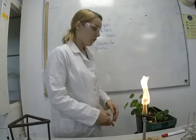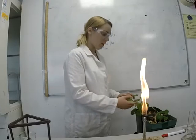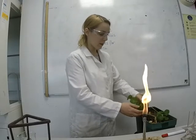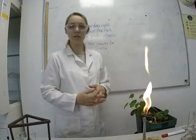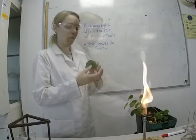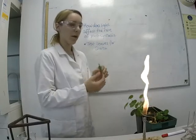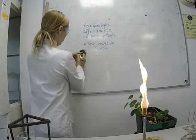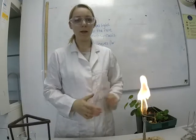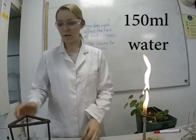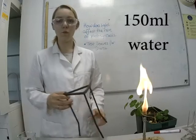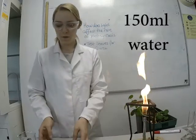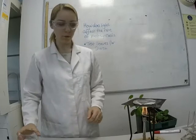First, take a leaf from either the dark or the light plant, depending on what your teacher has told you to do, and draw around it in your book. Then place that leaf in a beaker of boiling water for 30 seconds, so first you need to get your water boiling.